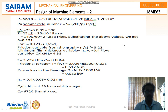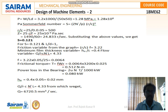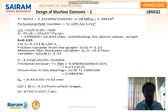Starting with bearing pressure: P = W / (l × d), where W = 3.2 × 10³ N, l = 50 mm, d = 50 mm, giving P = 1.28 MPa = 1.28 × 10⁶ Pa. The Sommerfeld number is S = (ZN'/P) × (r/c)², where r/c = 25 / 0.05 = 500, Z = 25 centipoise = 25 × 10⁻³ Pa·s, and N' = 1490/60 = 24.833 rev/s. Substituting these values gives S = 0.121.